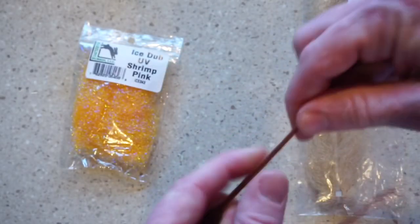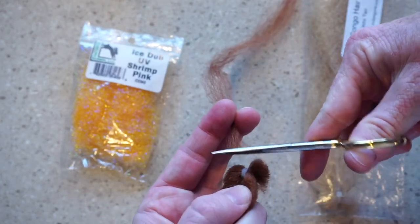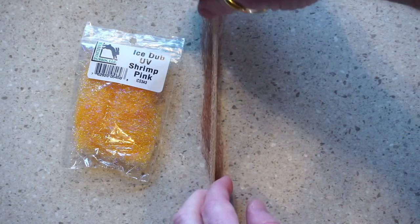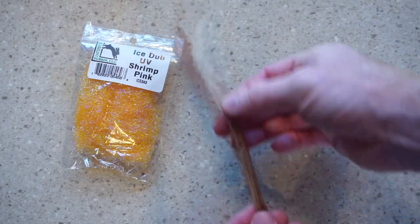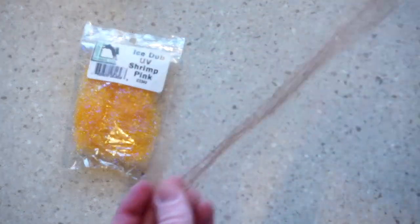I'm tying this with a mix of dark brown and caddis tan. Cut a strip out this large of the dark brown and then cut a strip about the same size of the caddis tan. You can mix them up a bit like so to get even distribution.